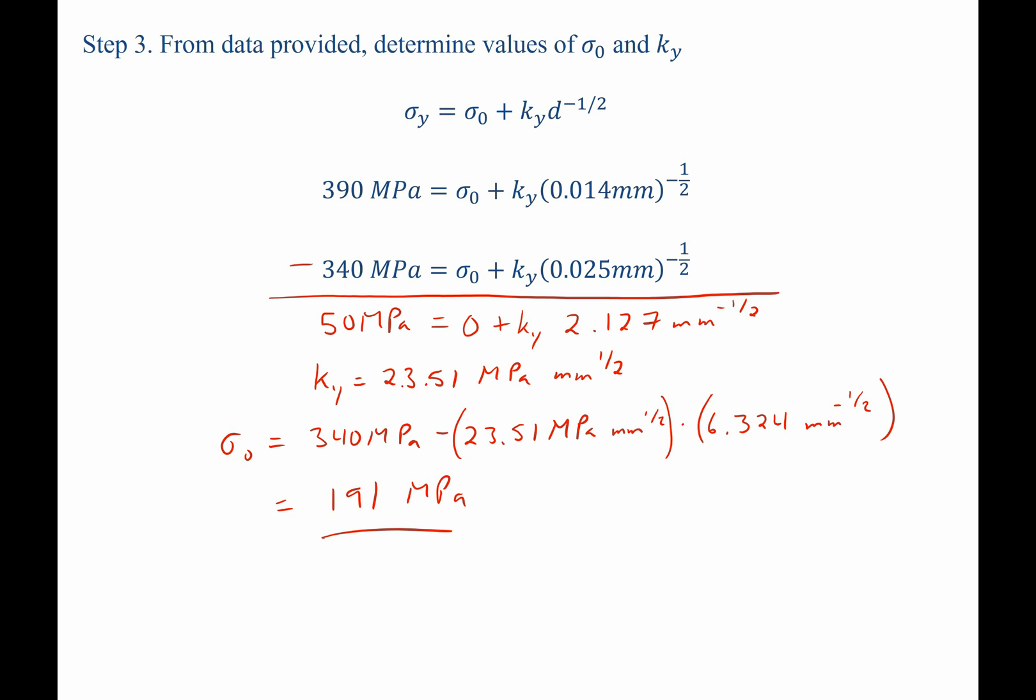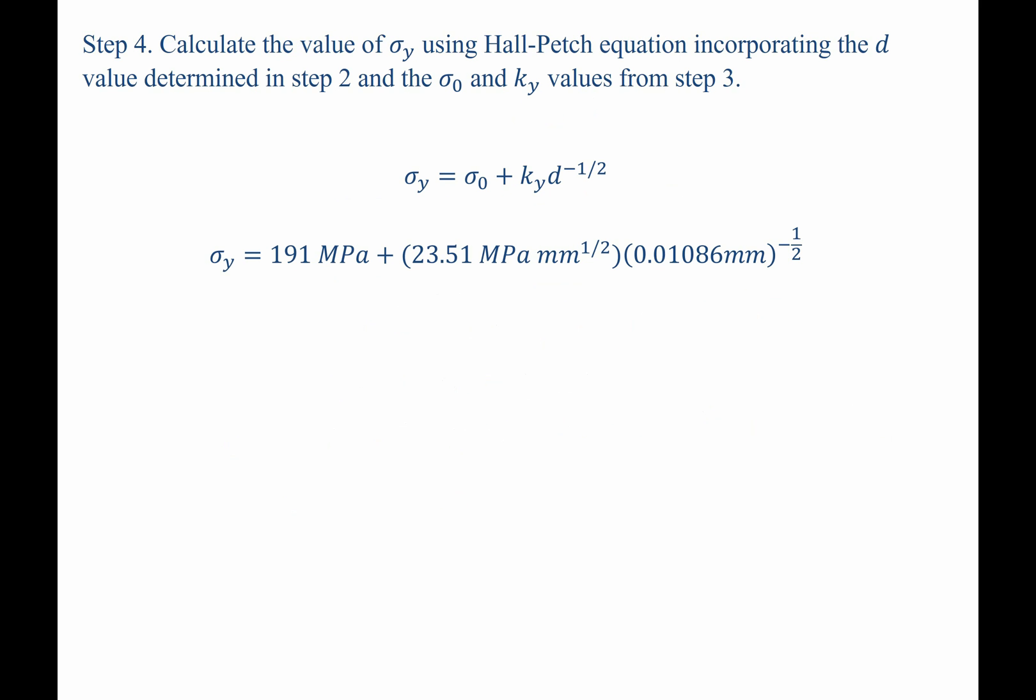So now we have a value for sigma-naught and k-sub-y. With these values, we've completed step 3, and we can continue to step 4, which states: calculate the value of sigma-y, the yield strength, using the Hall-Petch equation by incorporating the value of the grain size determined in step 2 and the Hall-Petch coefficients determined in step 3.